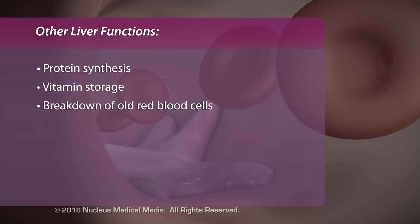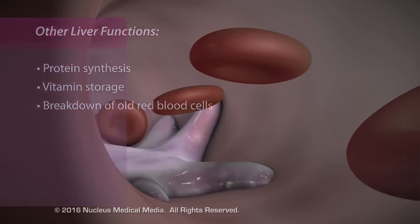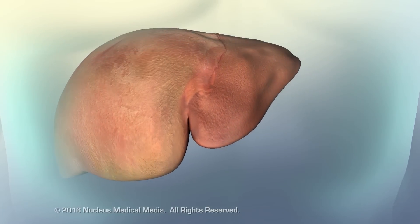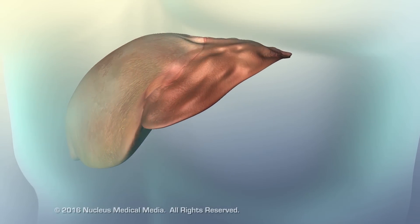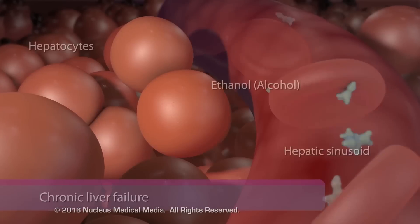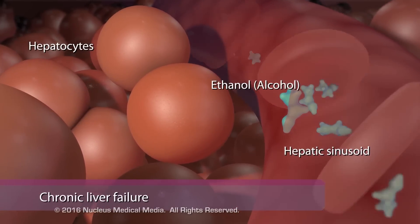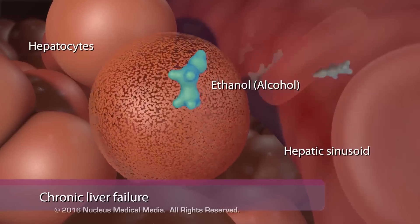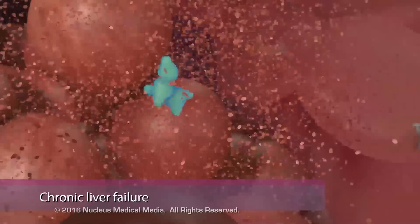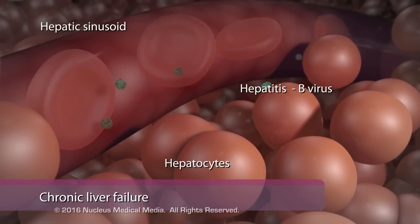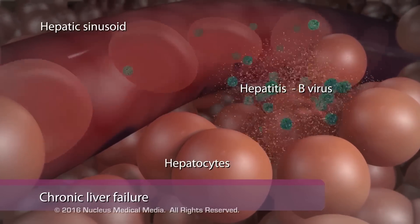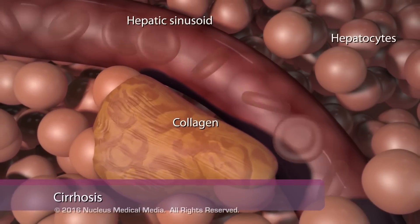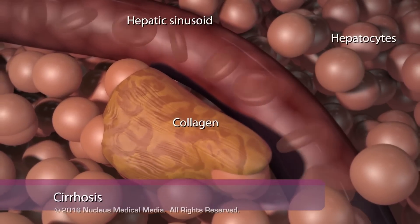Because the liver filters toxins, their accumulation can cause liver failure. Chronic liver failure, the most common form of liver failure, is most often caused by long-term alcohol abuse or slow-acting hepatitis B or C infection. Chronic liver failure causes damage through cirrhosis, or scarring of the liver.